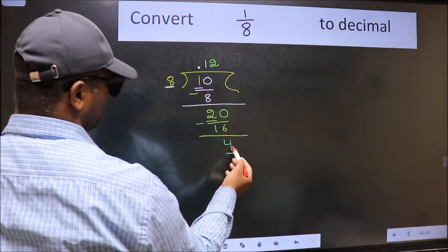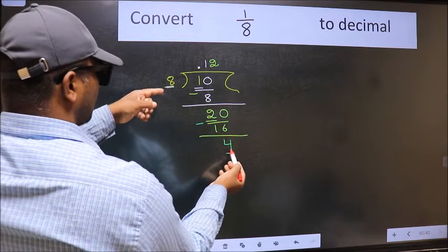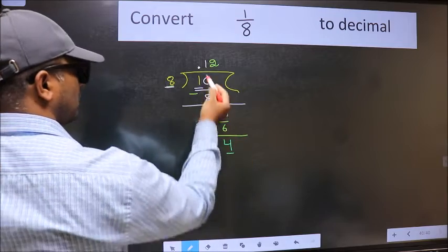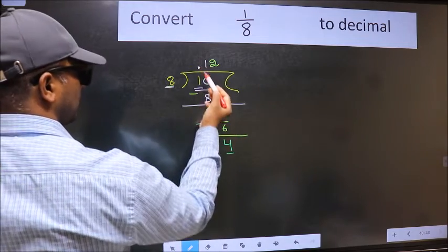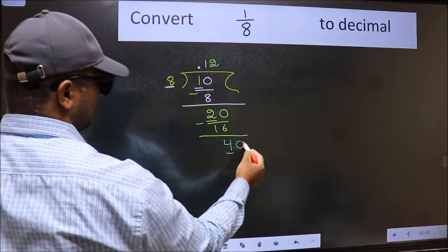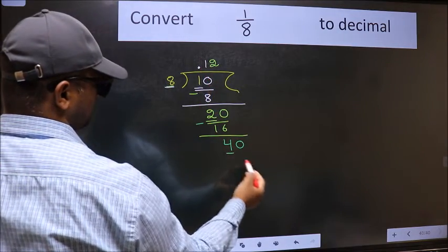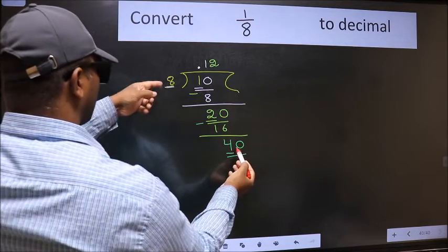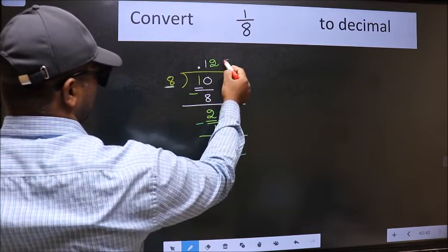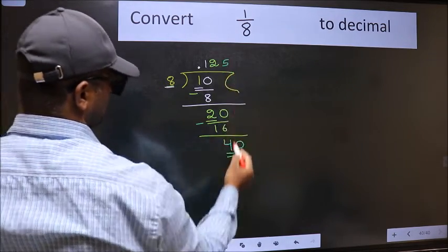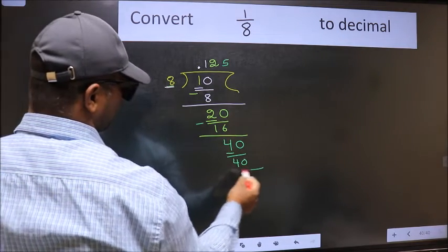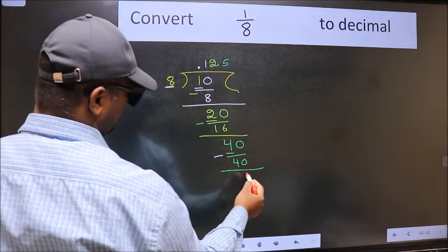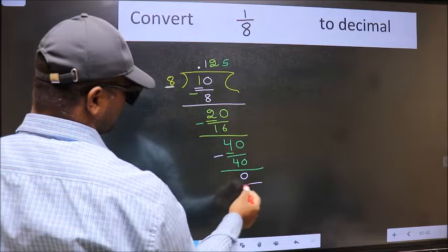Now here we have 4, here 8. 4 is smaller than 8, and we already have the decimal, so directly take 0. So 40. When do we get 40 in the 8 table? 8 fives are 40. Now we should subtract. We get 0.